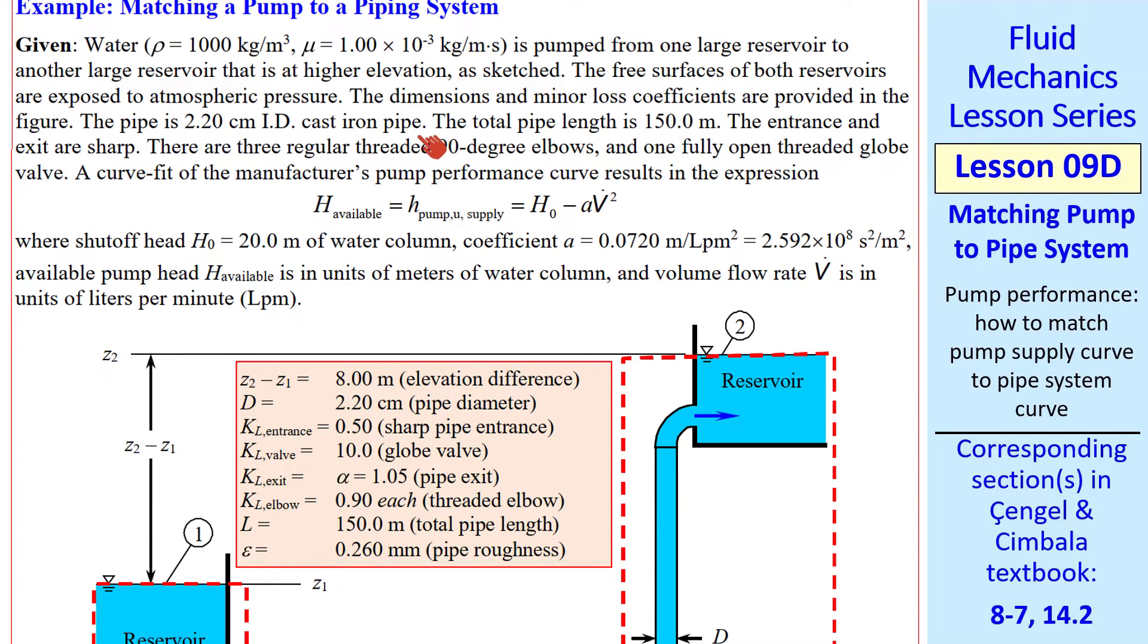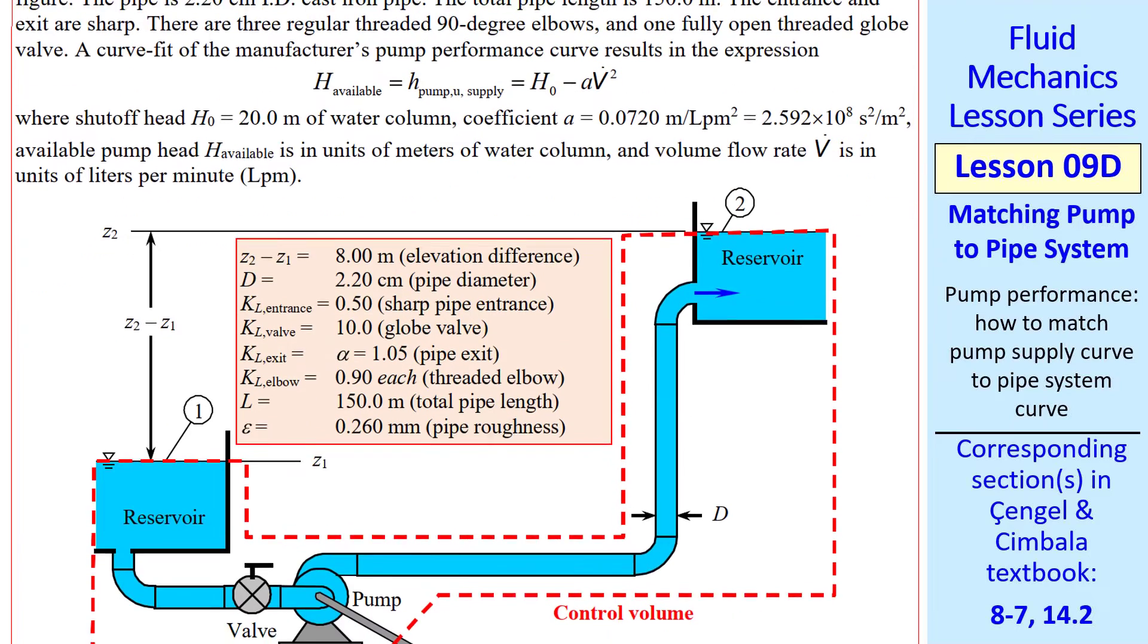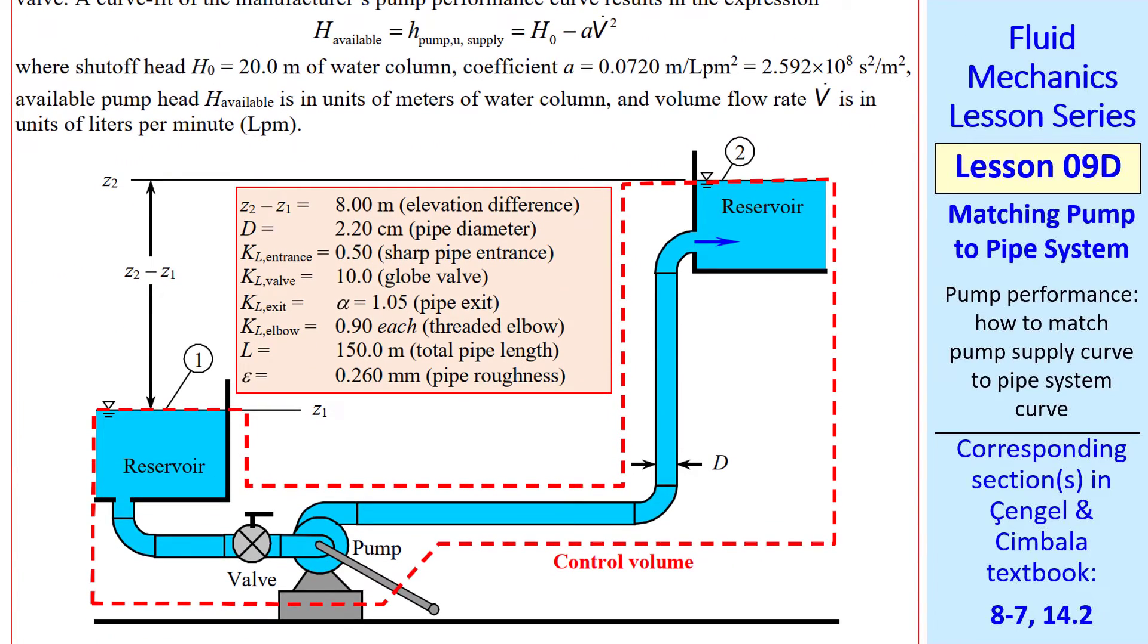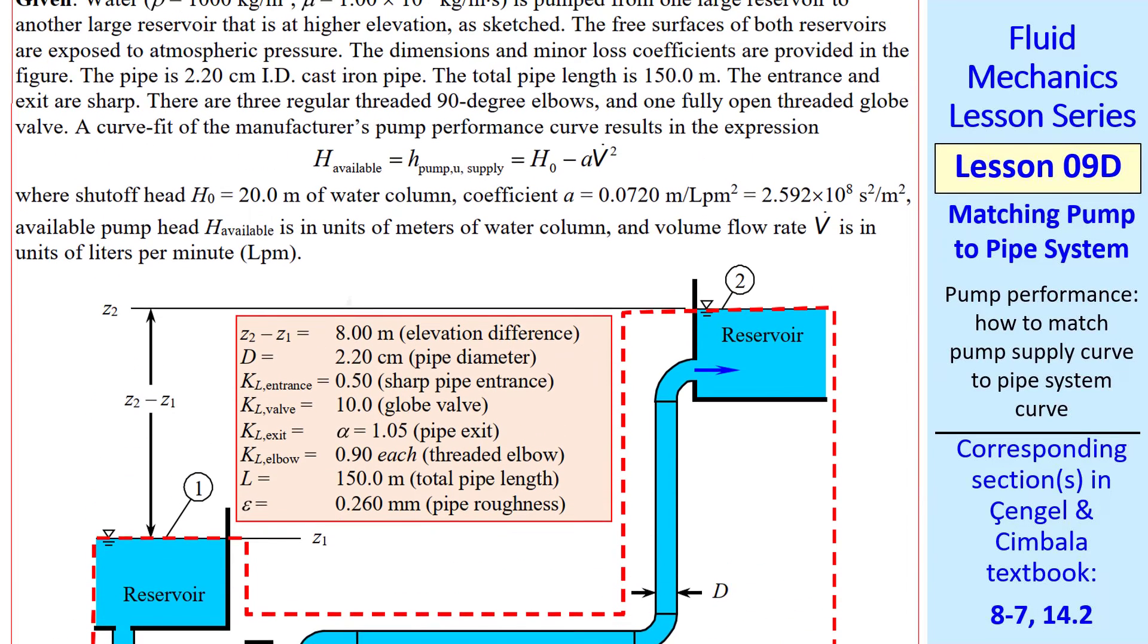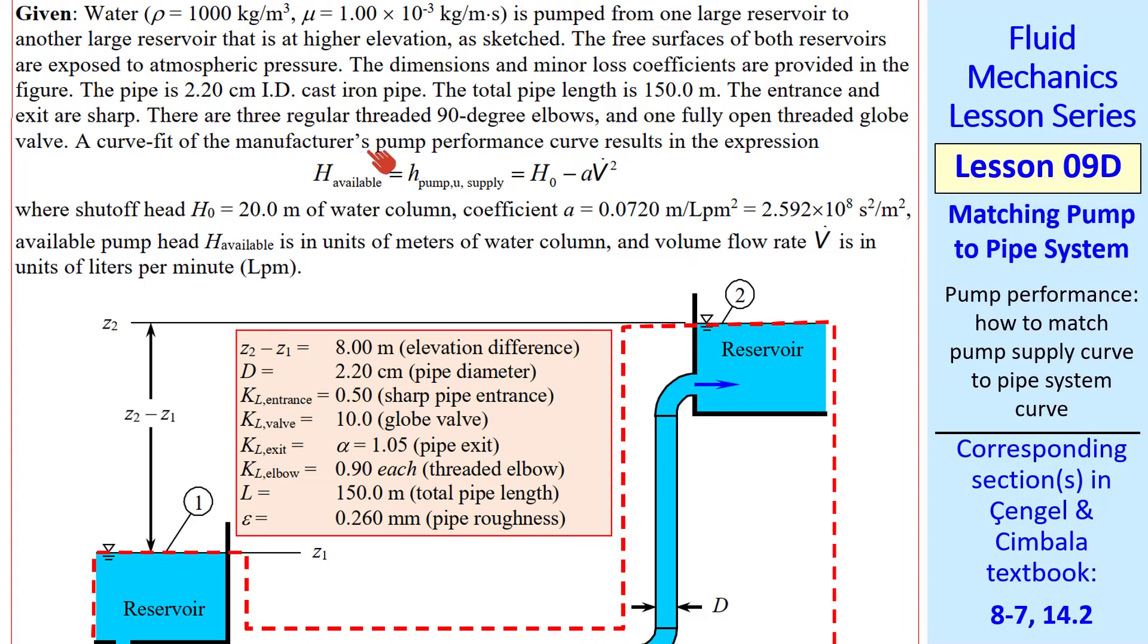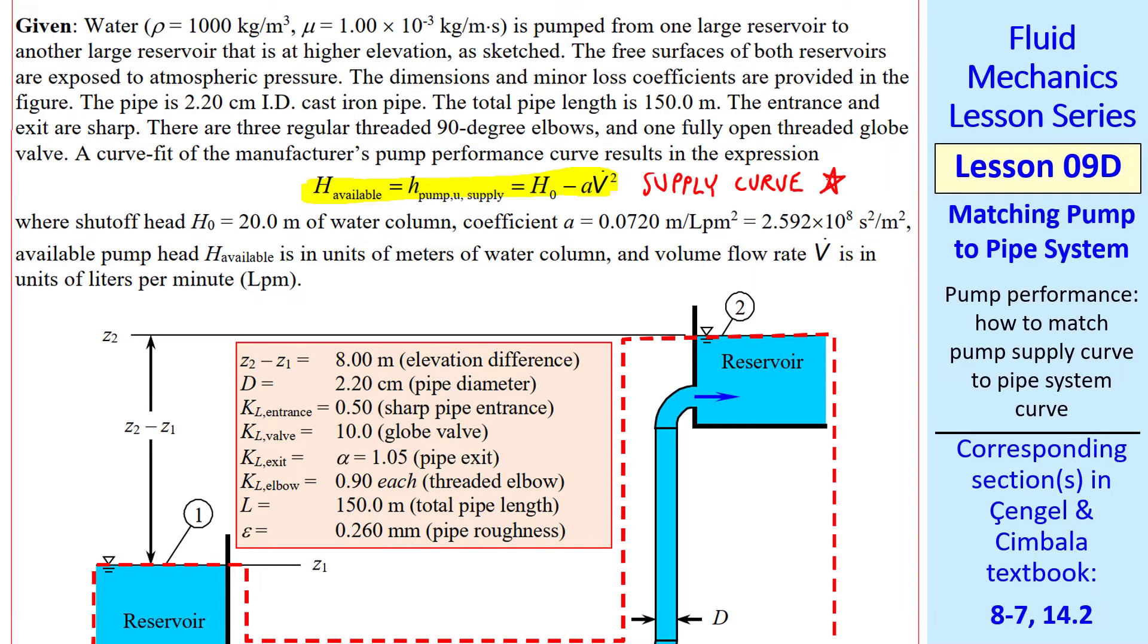We know how to generate the system curve. It's the same thing we've been doing for many example problems, except we'll do it not at just one volume flow rate but at several volume flow rates. We can create our system curve. What about the supply curve? Well that has to come from the manufacturer's pump performance curve specifications. What I did was a curve fit for this pump and created this equation. H available, or H pump U supply, is H0 minus A V dot squared. And these are the coefficients I obtained from the curve fit. So this equation is the supply curve.